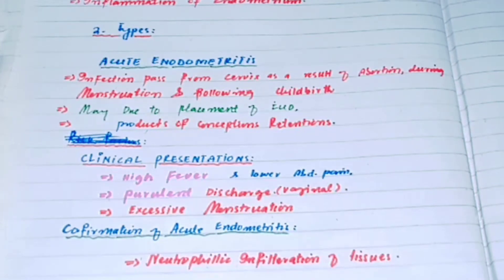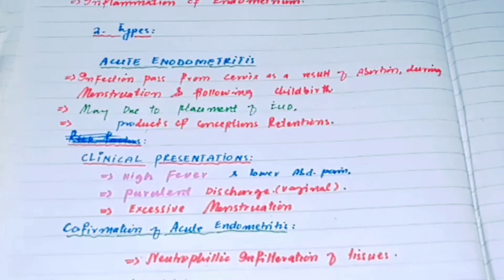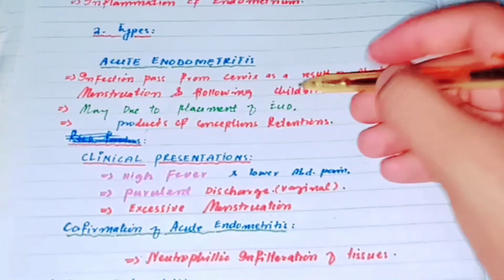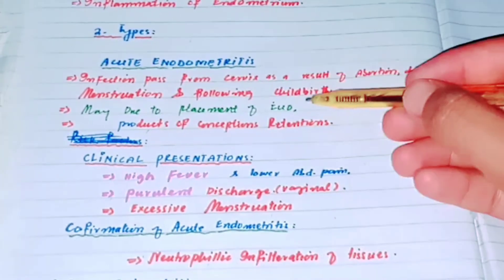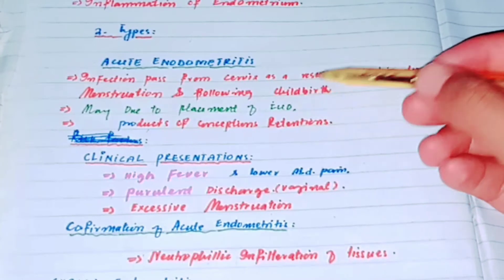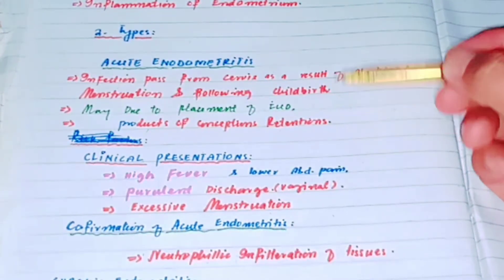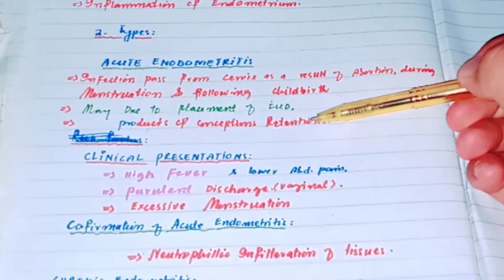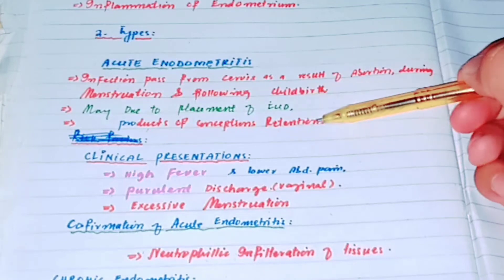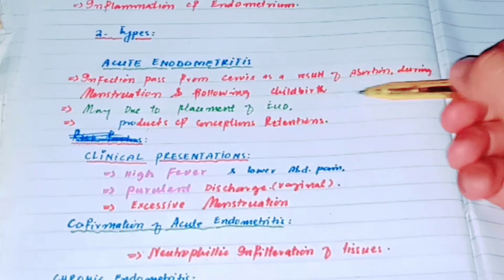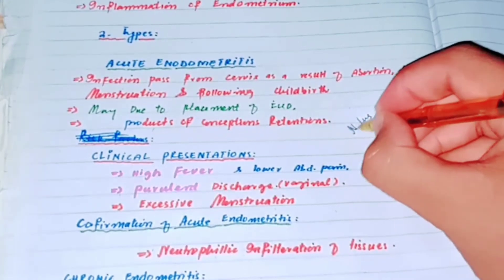Another cause is placement of an intrauterine device for contraception. It will act as a nidus for infection and cause the endometrium to inflame. Another cause of acute endometriosis is retained products of conception within the uterus, which will act as a nidus for organisms and cause the endometrium to inflame.